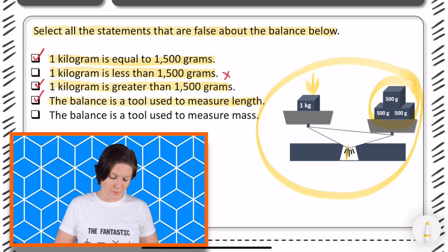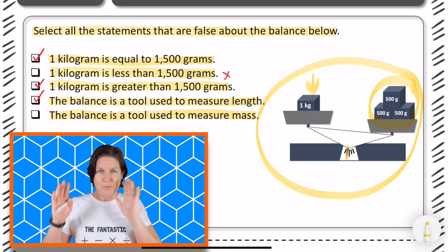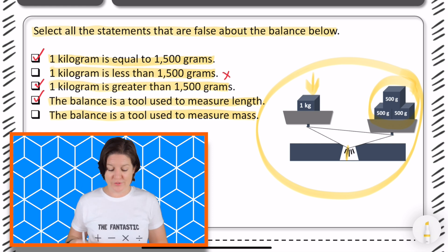And the next one, the balance is a tool used to measure mass. That is true. So, I want to choose it, but remember that the question says to select the ones that are false. It's kind of tricky because we're playing with all these negatives. But yes, the balance is a tool that does measure mass. That is true, but we're looking for the ones that say false.